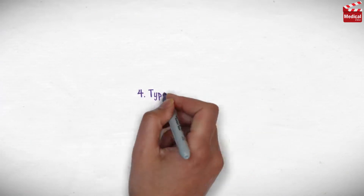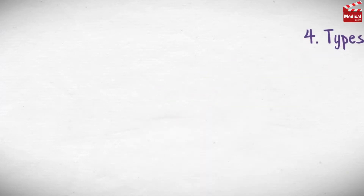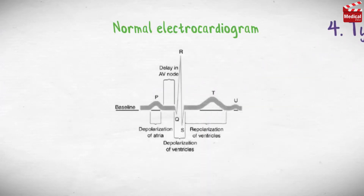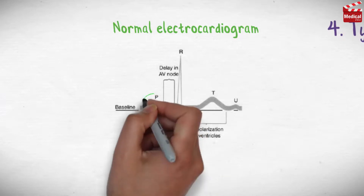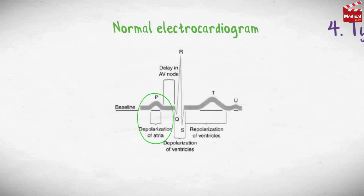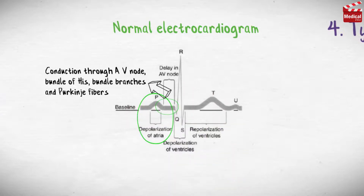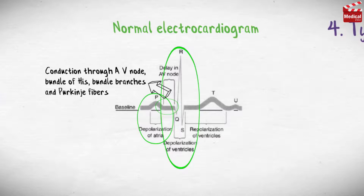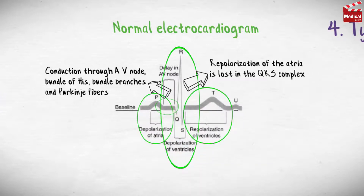Let's have a quick look at the normal electrocardiogram. The P wave represents the depolarization of the atria. The PQ interval represents the conduction through the AV node, bundle of His, bundle branches, and Purkinje fibers. The QRS complex represents the depolarization of the ventricles. The T wave represents the repolarization of the ventricles. Note that the repolarization of the atria is lost within the QRS complex.